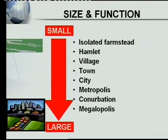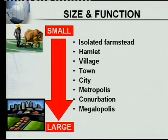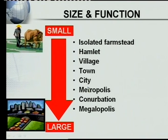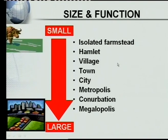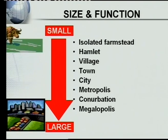Let's have a look at the most important three concepts in settlement geography. The first thing has to do with the size and function of the settlement. Some settlements are small and some are large. I've arranged the settlements from smallest to largest: the isolated farmstead, the hamlet, the village, the town, city, metropolis, conurbation, megalopolis — they are getting bigger and bigger all the time. You must know which one is bigger than the other, and please be able to give a short description of each one.